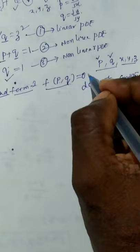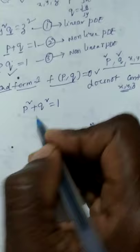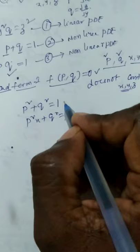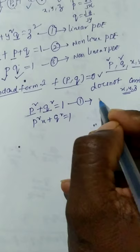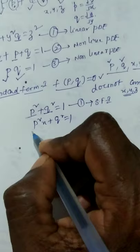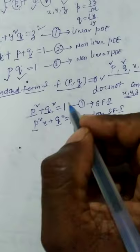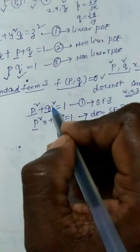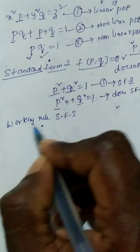If the given equation is in this form it belongs to Standard Form 1. For example, p² + q² = 1 contains only p and q and does not contain x or y, so it belongs to Standard Form 1. However, p²x + q² = 1 contains p, q, and also x, so it does not belong to Standard Form 1. We first check whether the equation is linear or nonlinear, then whether it belongs to Standard Form 1.